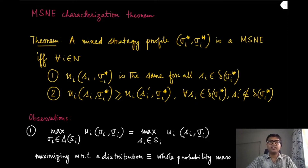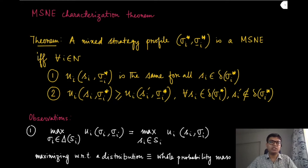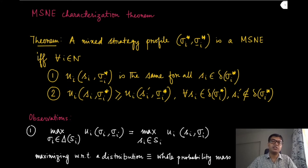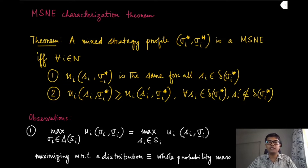We have used the MSNE characterization theorem to find an algorithm to compute MSNE, and in this module we are going to prove that fundamental theorem which gave rise to that algorithm. The theorem states that a mixed strategy profile (σᵢ*, σ₋ᵢ*) is a mixed strategy Nash equilibrium if and only if two conditions hold. For every player, the utility when playing pure strategy sᵢ against σ₋ᵢ* is the same for all strategies in the support of σᵢ*.